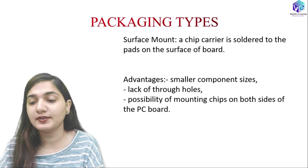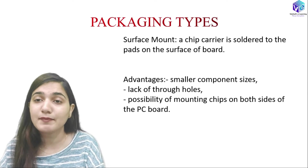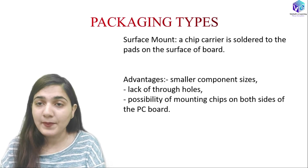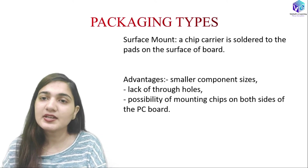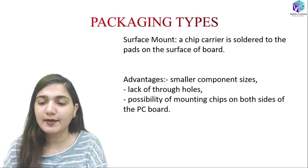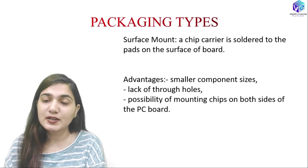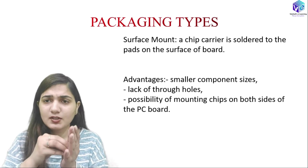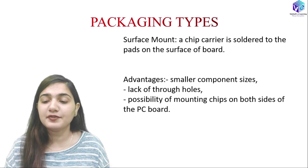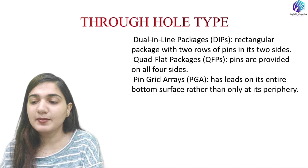In Surface Mount, a chip carrier is soldered to pads on the surface of the board. The advantages of Surface Mount include smaller component size, which is critical for compact structures. There are no through-holes needed, and it allows the possibility of mounting chips on both sides of the PCB. In Through-Hole, chips can only be mounted on one side of the board.